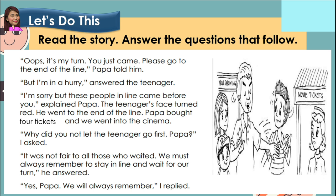'Oops! It's my turn! You just came? Please go to the end of the line,' Papa told him. 'But I'm in a hurry,' answered the teenager. 'I'm sorry, but these people in line came before you,' explained Papa. The teenager's face turned red. He went to the end of the line. Papa bought four tickets and we went into the cinema. 'Why did you not let the teenager go first, Papa?' I asked. 'It was not fair to all those who waited. We must always remember to stay in line and wait for our turn,' he answered. 'Yes, Papa. We will always remember,' I replied.